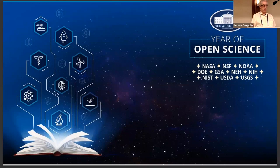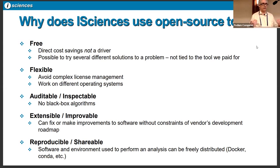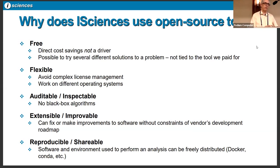As a small company, we don't have big computing platforms, so we rely very heavily on open source data and open source tools. The obvious reason everybody thinks of is that they're free, and that's great, but the cost savings are not the driver. The key thing about open source from our perspective is it allows us to try a number of alternative solutions without being tied to some tool we've paid for. It's flexible — we don't have complex license management issues when working on different operating systems. It's auditable and inspectable, so we can see precisely what the software is doing.